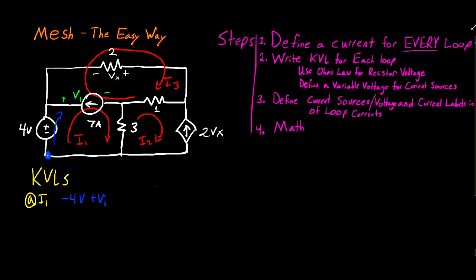Now we've reached the 3-ohm resistor. The voltage across it can be related through Ohm's Law, but in mesh analysis things get a little interesting. The current going through the 3-ohm resistor isn't just I1 — it's actually the superposition of I1 and I2. Part of the current going in one direction is I1, and part going the other direction is I2. So the net current Ia equals I1 minus I2, which is the current actually flowing through the 3-ohm resistor.